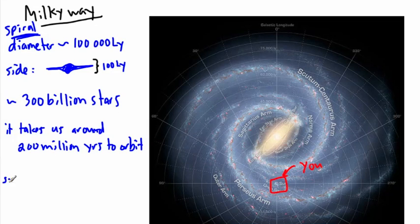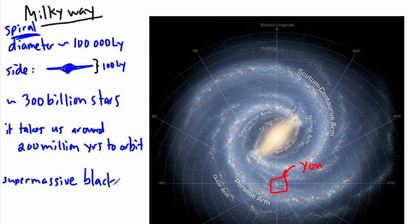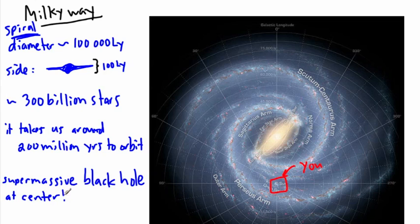And we have a supermassive black hole at the center of our galaxy. And that's something fairly new that we know now, quite for sure now. So supermassive black hole at the center. How massive? It's about a few million masses of the Sun.